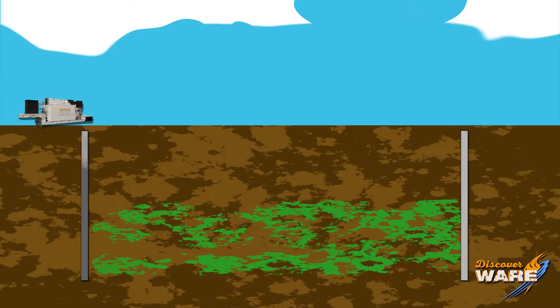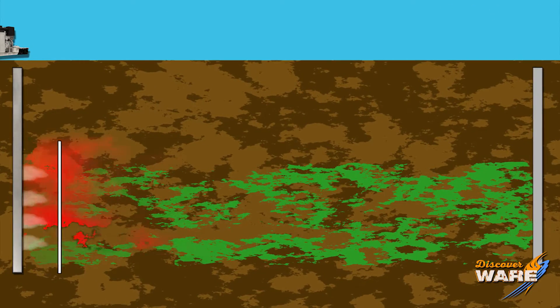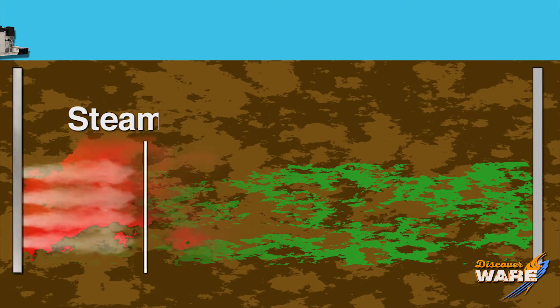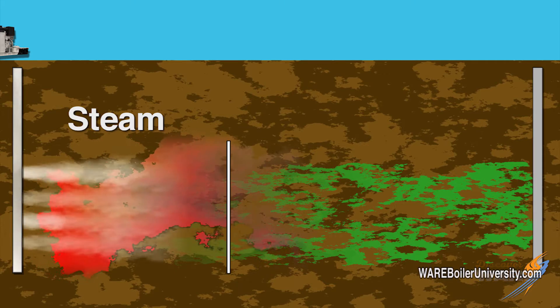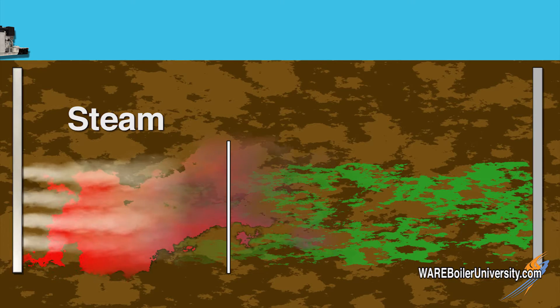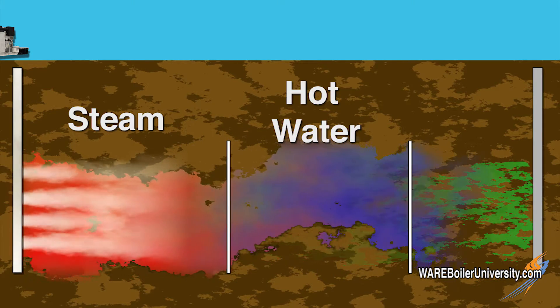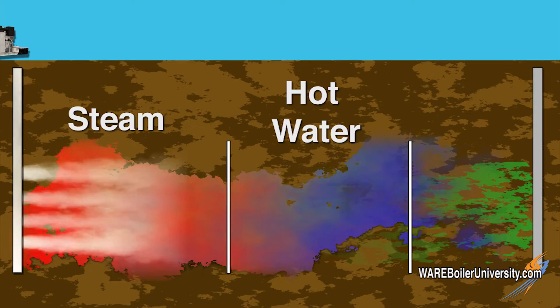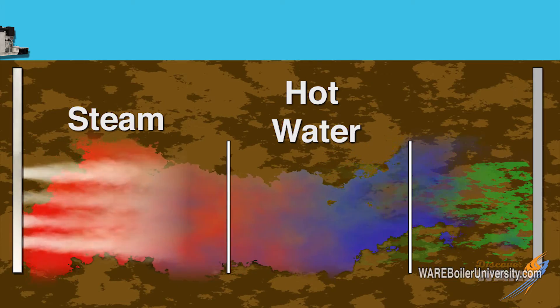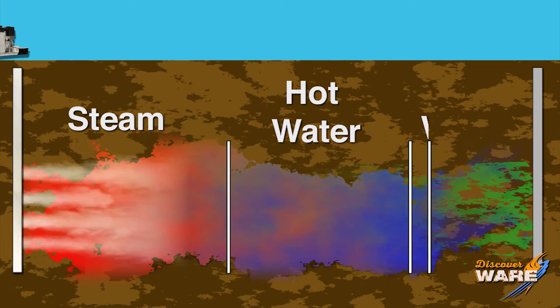We made a video to help illustrate this better. On the left you see the steam injection well and on the far right you see the extraction well. High-pressure steam is sent down that steam well, and as it comes out and hits the rock it starts to work through all the fissures and cracks. It starts to give up some of its heat and turns into hot water, and as the hot water gets farther away from the steam source it turns into cold water.